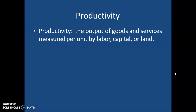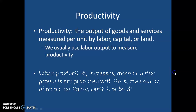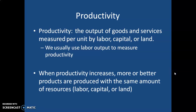Here's a definition of productivity: it's the output of goods and services measured per unit of labor, capital, or land. We can measure productivity based on capital or land, but usually we measure it through labor productivity — that is, how much output can be generated by workers per hour. When productivity increases, more or better products are produced with the same amount of resources: labor, capital, or land.